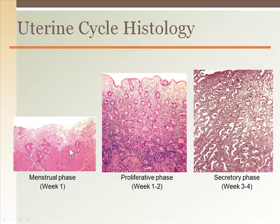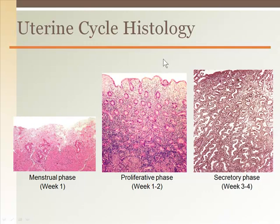Week 1 of the uterine cycle begins with the removal of the endometrium during menstruation. It is considered week 1 based on what is going on in the ovaries, where new eggs are being formed during this time. The weeks following menstruation are about rebuilding the endometrium, driven by estrogen — this is called the proliferative phase. Finally, the endometrium is built and completed with glands that secrete a glycogen-rich substance to nourish an implanted embryo. If no embryo implants, hormone levels drop, the endometrium falls apart, and the cycle starts over with the menstrual phase.